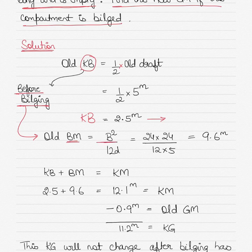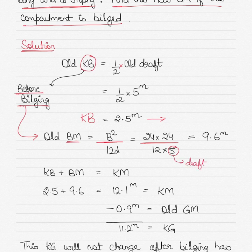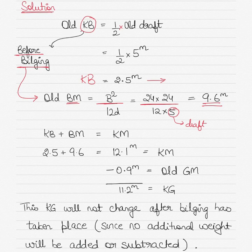Similarly, before bilging, the BM can be calculated by the square of the breadth of the vessel divided by 12 times the draft of the vessel — the old draft before bilging again. So the breadth is 24, so 24 times 24 divided by 12 times the old draft gives you 9.6 meters as the BM.